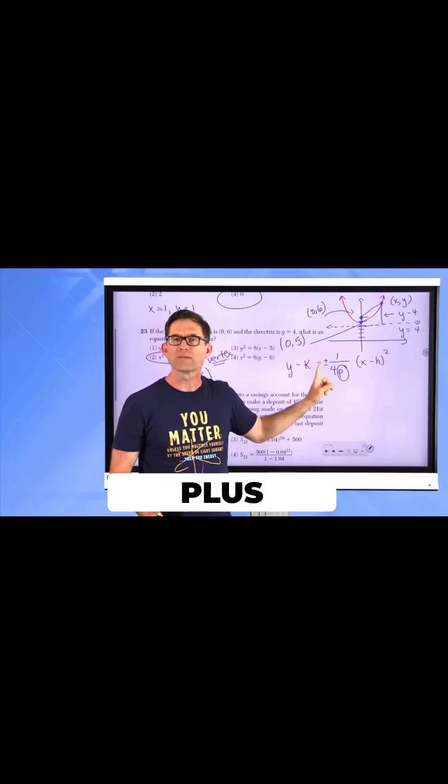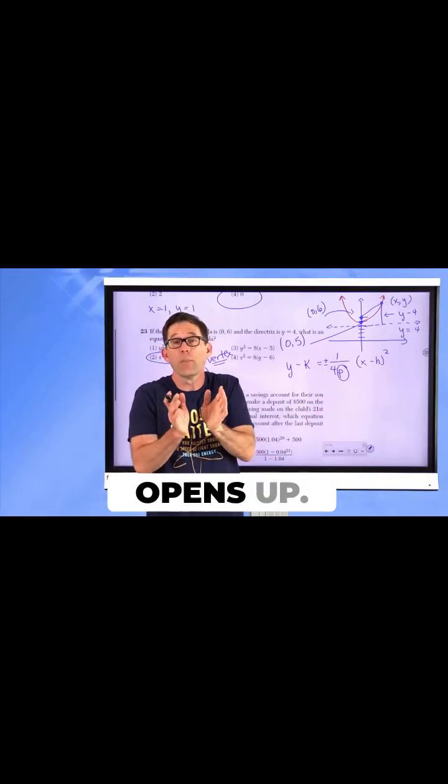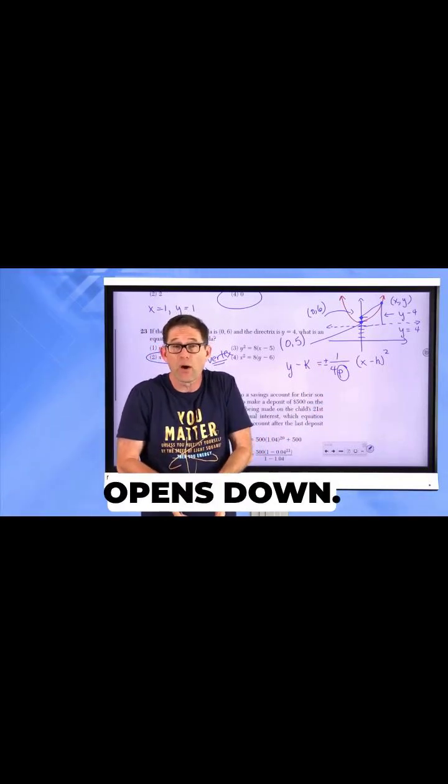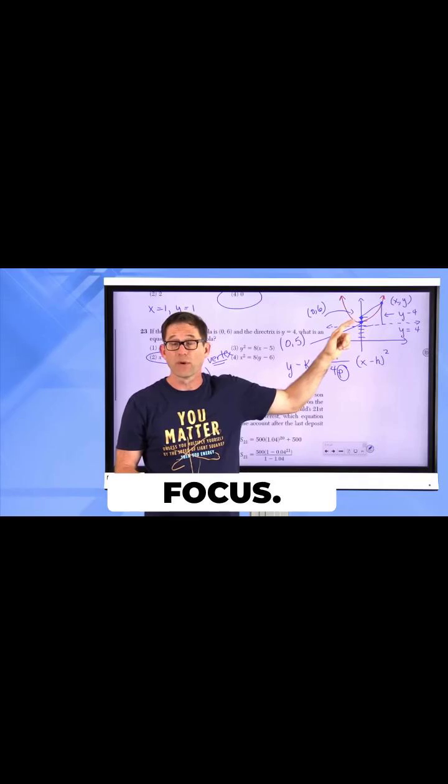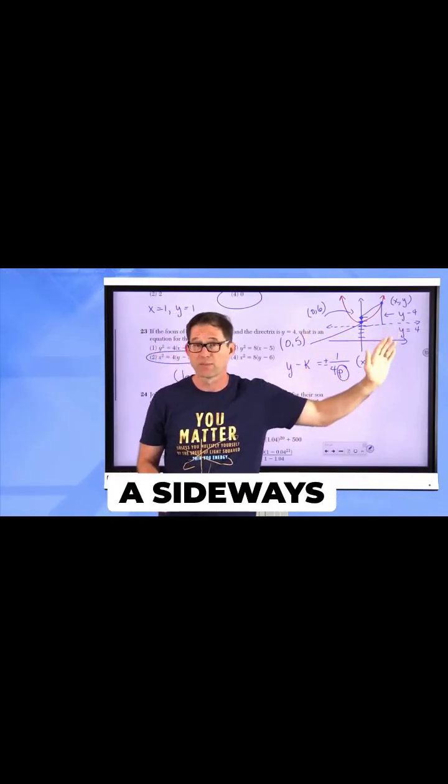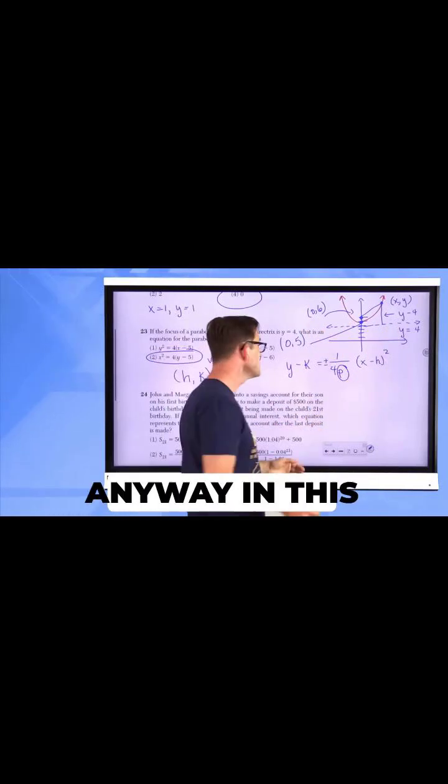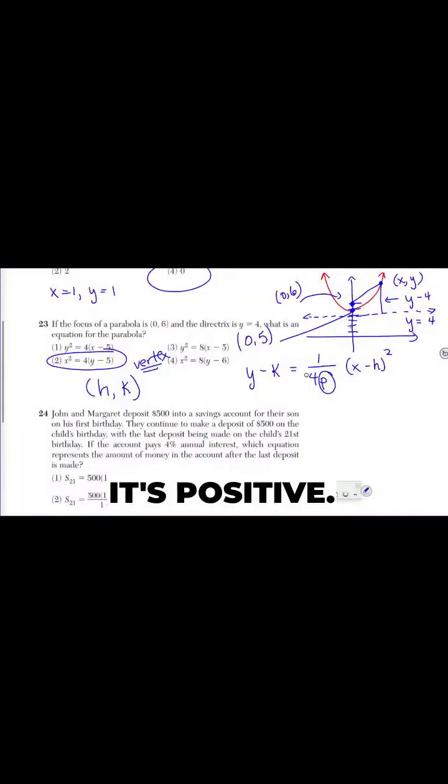Now why is it plus minus? That's because maybe the parabola opens up, maybe the parabola opens down. That all depends on where the directrix is, the horizontal line versus the focus. Hopefully they don't give you a sideways parabola. They could. In this case, because it opens upwards, it's positive.